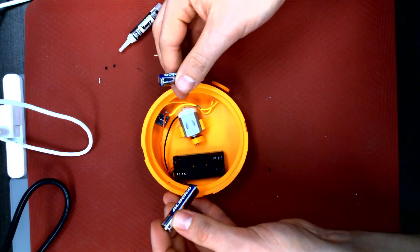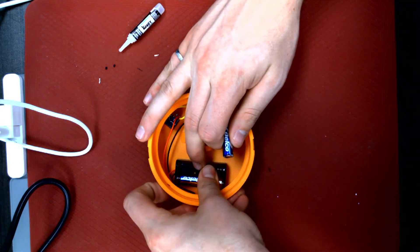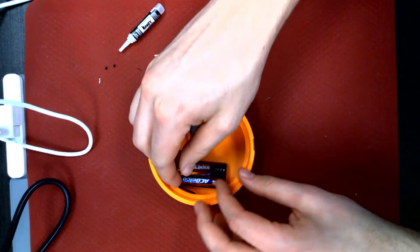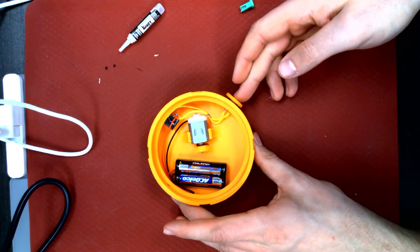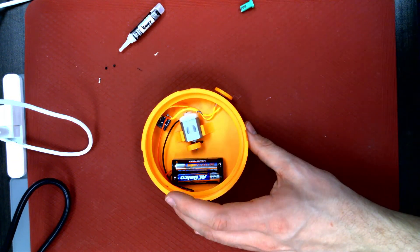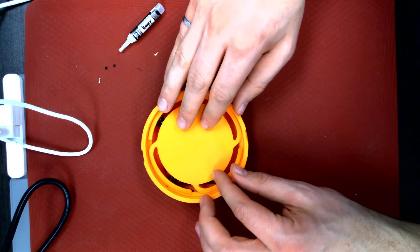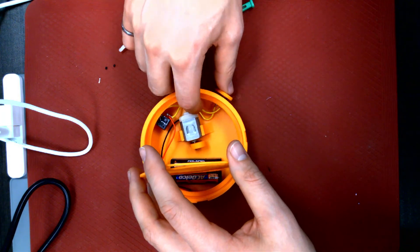Now you can add batteries into the battery compartment and test that the button and switch work. To test the switch, simply plug an AT switch into the jack and press it. Once you've confirmed the circuit works, you can begin assembling the rest of the device.